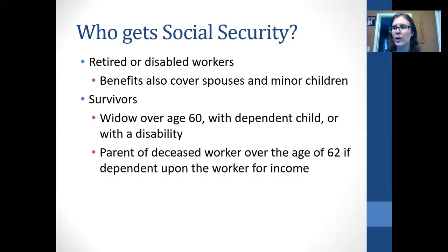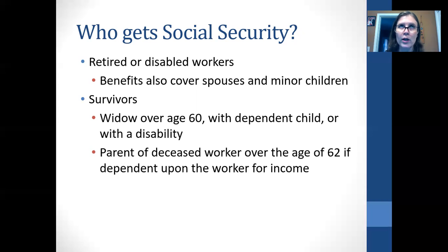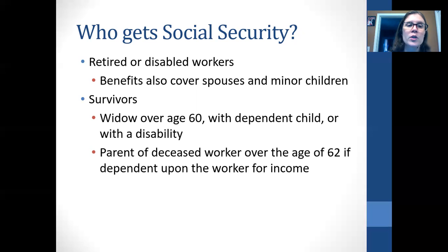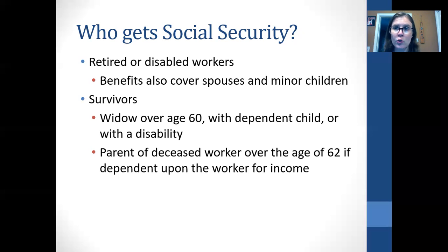The first group who receive it are retired people. You can start receiving social security at age 62 for partial benefits, but full retirement benefits are at age 67, and you get more if you wait until 67. That's the current retirement age, though it is likely to go up. Social security also covers spouses and minor children — if you're 67 and have kids under 18, your kids could also receive social security, and your spouse could receive it depending on their age.